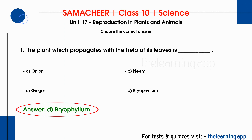In Bryophyllum, reproduction happens through leaves. In the margin of the leaves, there are a few buds. The buds detach, fall to the ground, and germinate into a new plant. This is vegetative reproduction by leaves — for example, Bryophyllum.